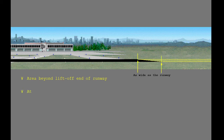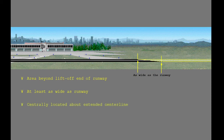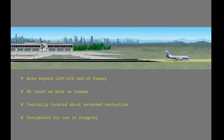Stopway is an area beyond the lift-off end of the runway that is at least as wide as the runway, centrally located about the extended centerline of the runway, designated by the airport authorities for use in decelerating an airplane during a rejected takeoff, and able to support the airplane during an aborted takeoff without causing structural damage. Stopway may be used to increase the field length limit takeoff weight by increasing the accelerate-stop distance available for takeoff performance calculations.